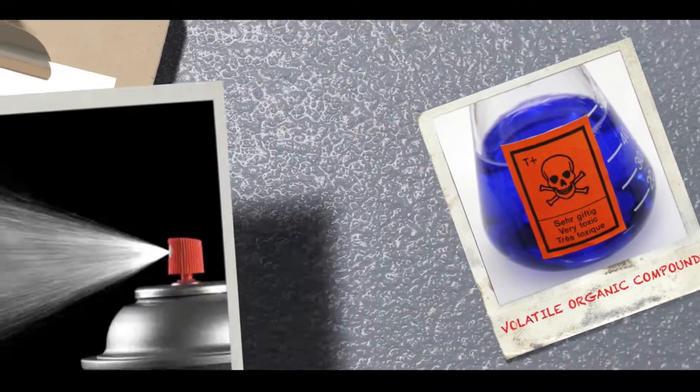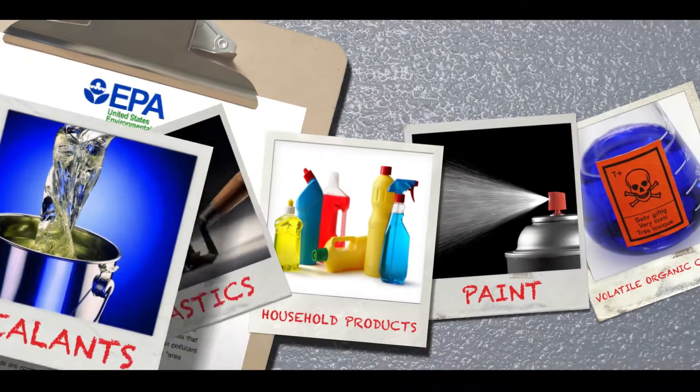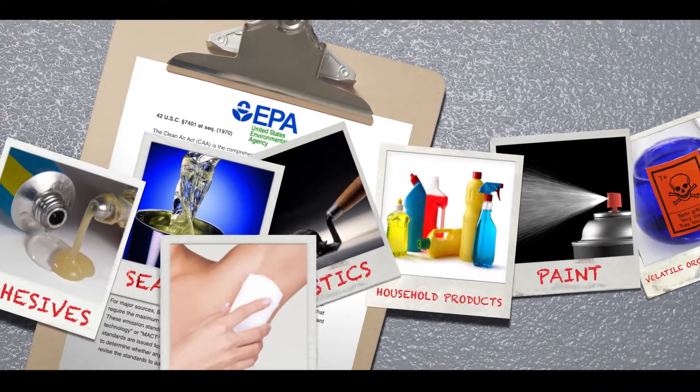But those old solvents contain VOCs, which are terrible for the environment and for the health of the people who handled them. VOCs were found in everything from paints and coatings to underarm deodorant. In 1973, the U.S. government passed the Clean Air Act.